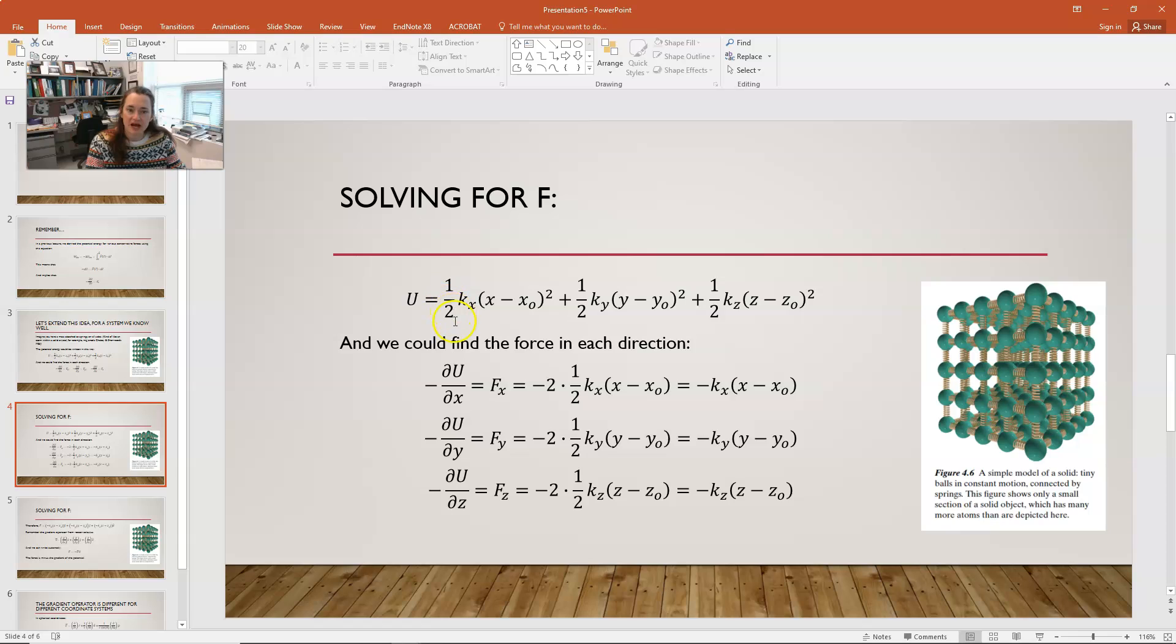If I take the derivative of that, of course, 1 half and k sub x are constants. So, those gates just get pulled out front. And then, I have 2 times 1 half k sub x times x minus x naught. And then, the negative sign comes from the negative partial. So, that's what that is.